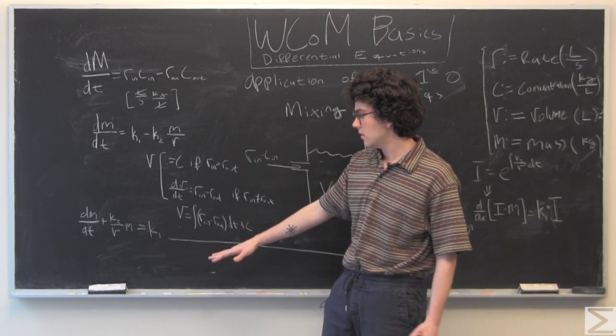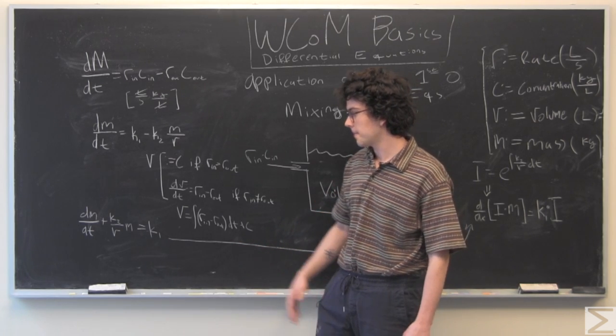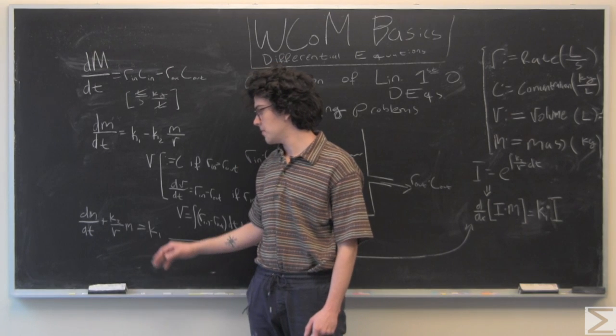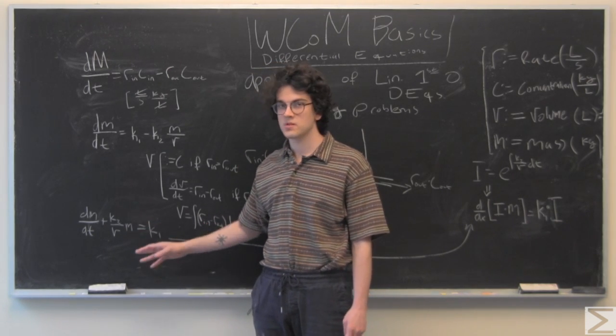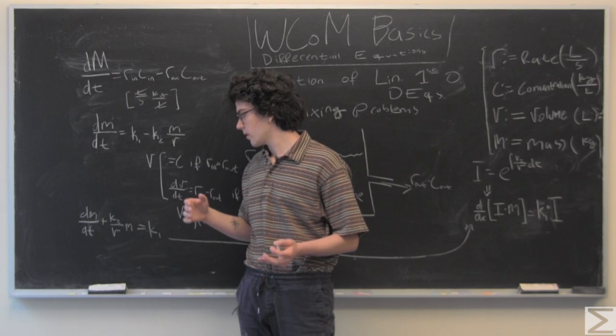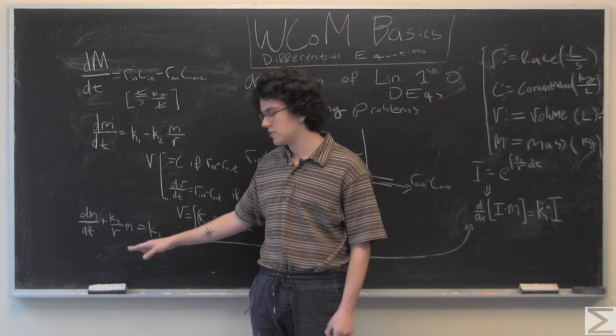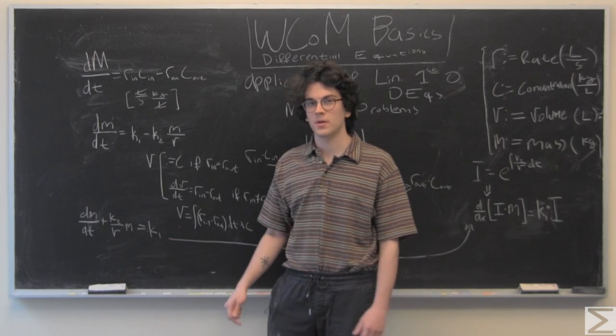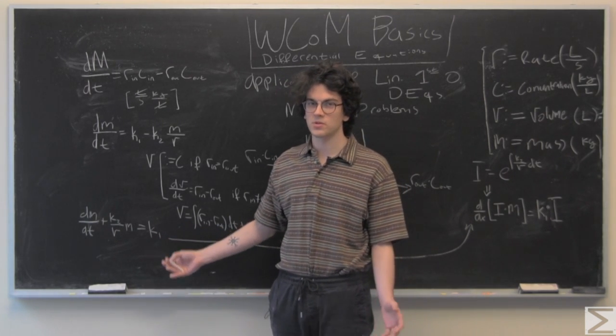So, coming from here, we have m, our derivative of m with respect to time. And then plus our p of x, or I guess p of t as a function of times m, and then is equal to k1. And one thing nice is that k1 is always going to be constant.